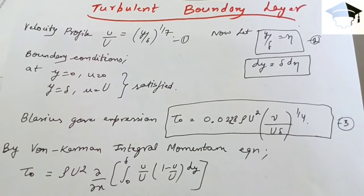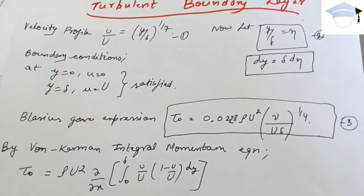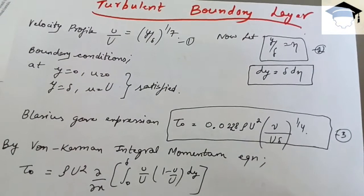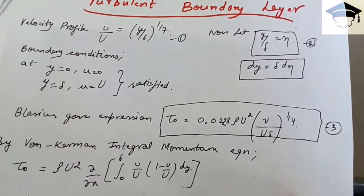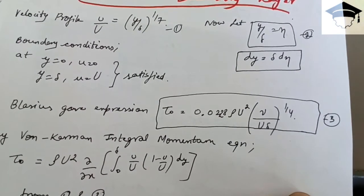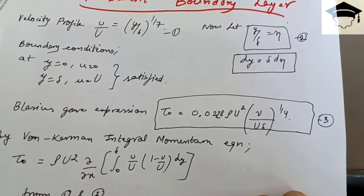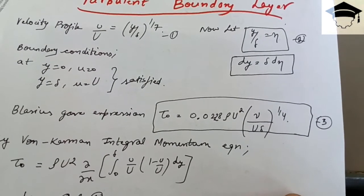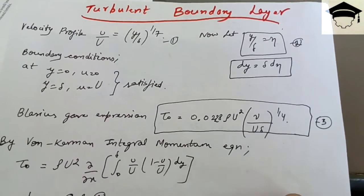Blasius gave the expression for wall shear stress: τ₀ = 0.0228 ρU² (ν/Uδ)^(1/4), where ν is the kinematic viscosity, U is the free stream velocity, δ is the boundary layer thickness, and ρ is the density.